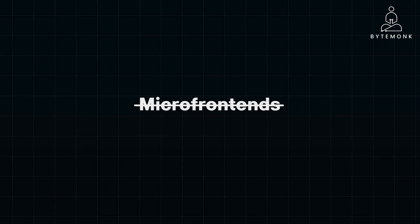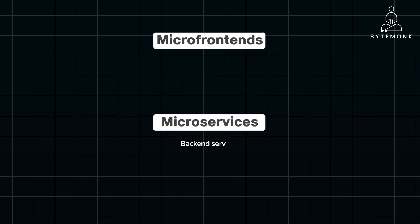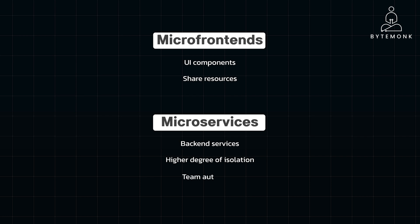Micro-frontends are an extension of microservices principles to the frontend world — in microservices these are backend services, while in micro-frontends they are UI components. Microservices typically have a higher degree of isolation, as they are completely independent systems with their own runtimes and data stores. Micro-frontends, while modular, often need to share resources and collaborate to create a cohesive user interface, requiring teams to share design guidelines, UI components, or shared libraries.